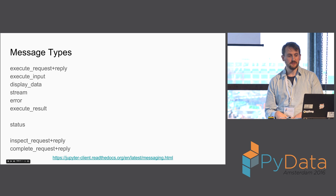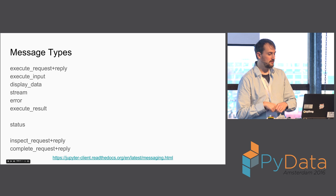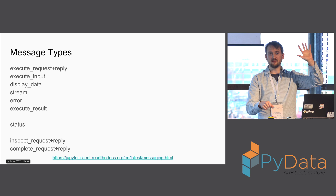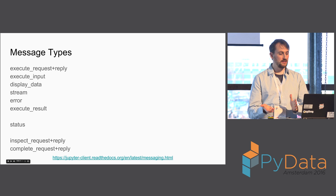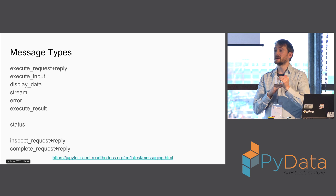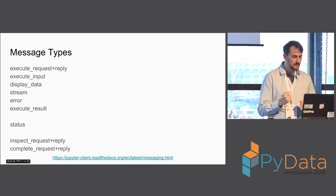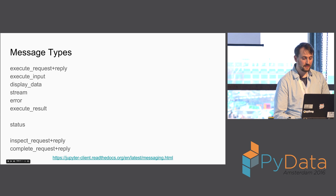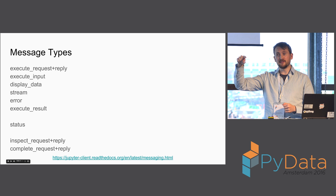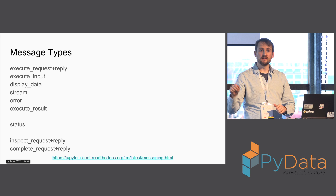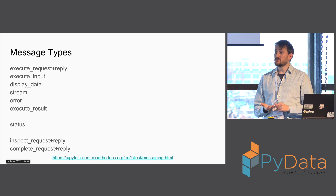Various message types we've got: execute_request and reply — that's the standard read-eval loop. execute_input — every time you execute, the kernel broadcasts to everyone listening that it's about to run this code. display_data for rich outputs. Stream messages for when you type print, write to stdout — these are plain terminal text processed through ANSI escapes. Error messages with tracebacks. execute_result for the result of execution. Status messages — if you've ever seen the little circle that's filled or empty, that's how the kernel communicates: it says 'I'm busy now', and when it finishes, 'I'm idle.'